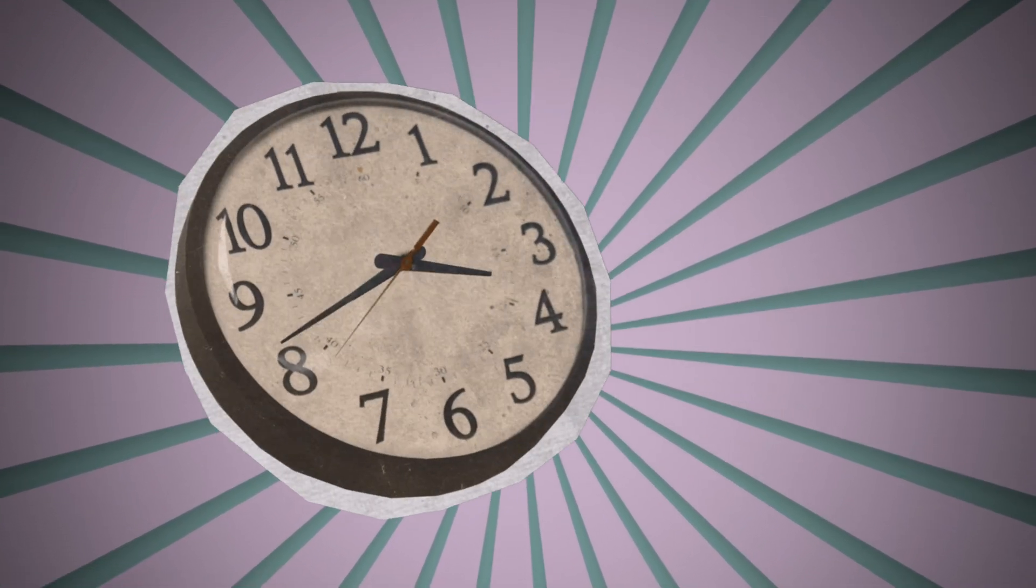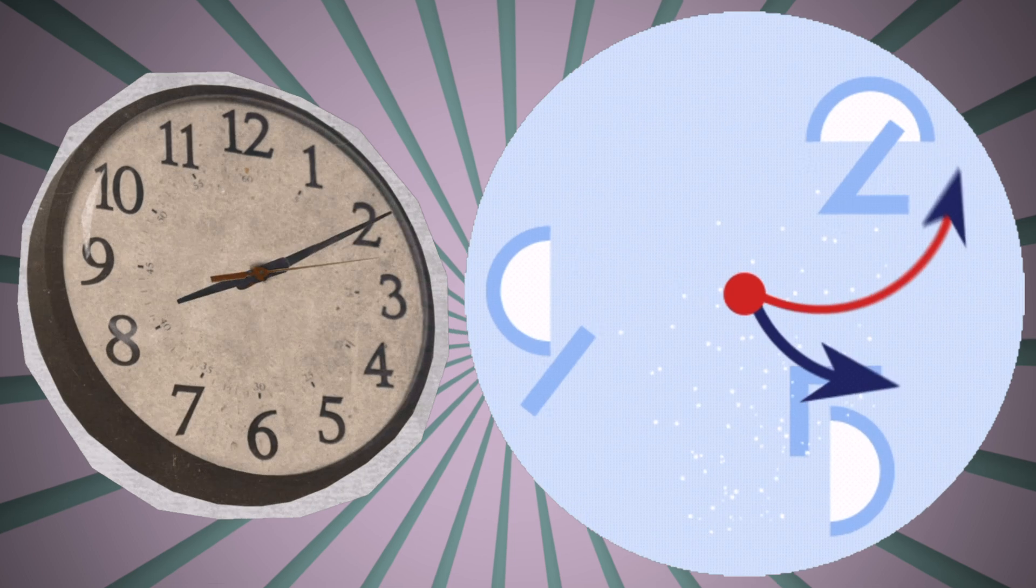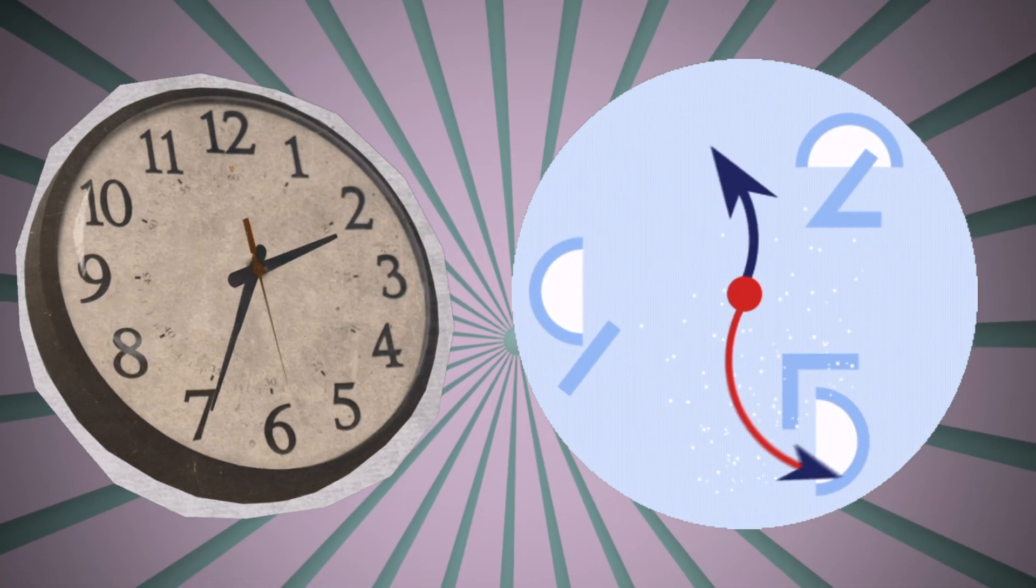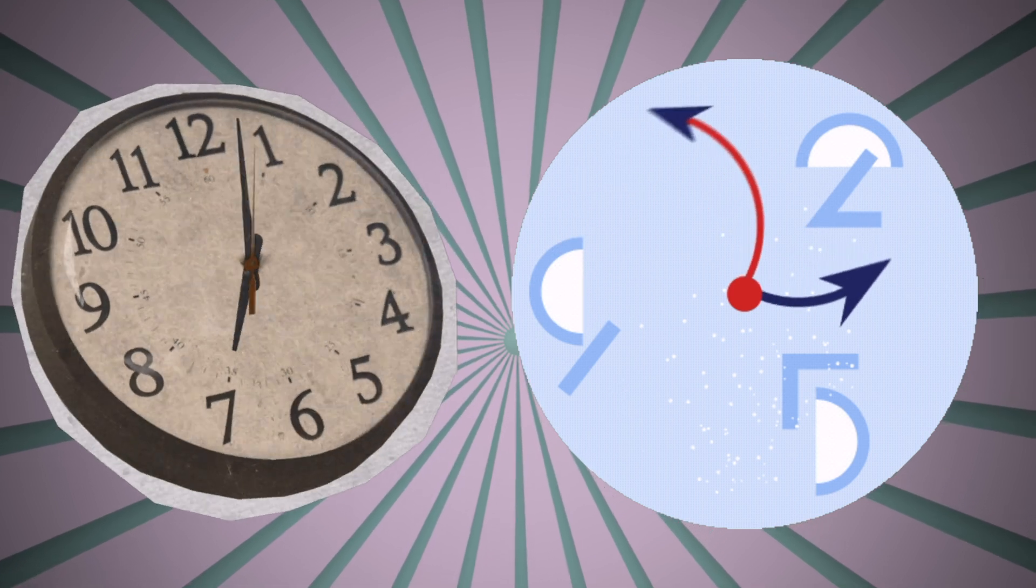Oh, and clocks. Clocks have circles too. The face of the clock is round like a circle, and the hands go around and around to tell us the time.